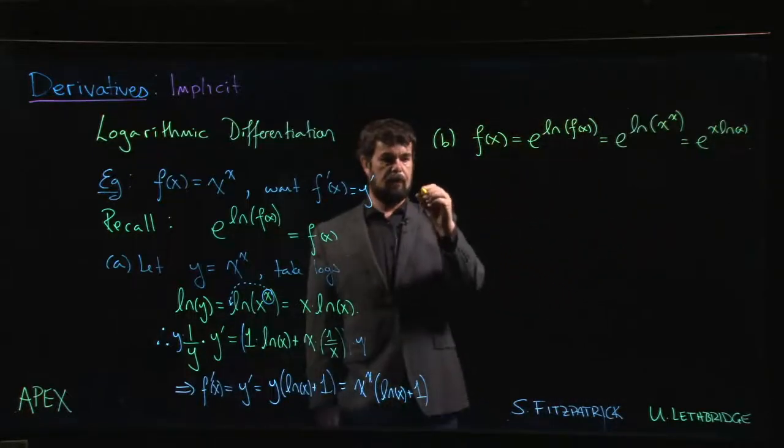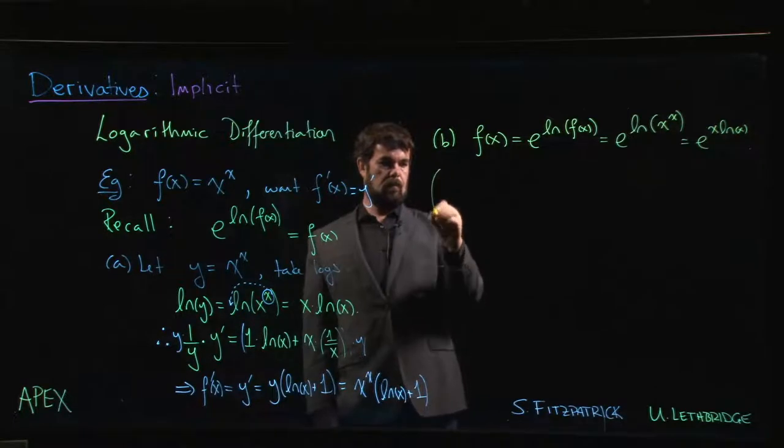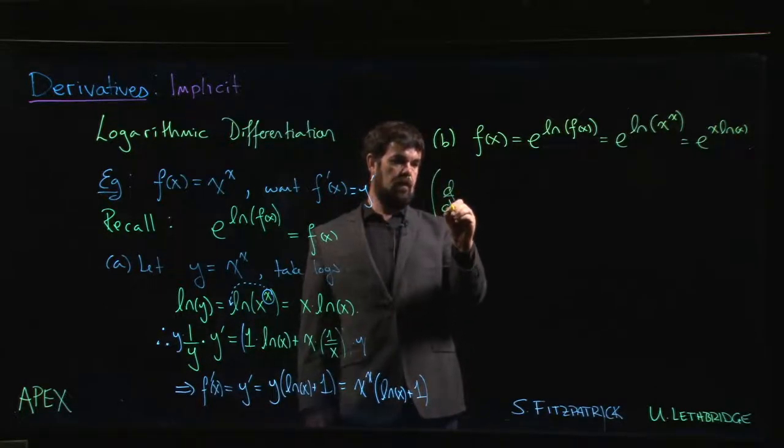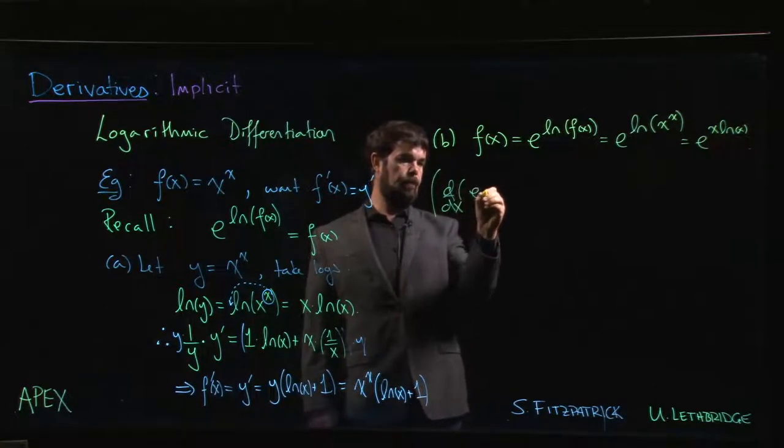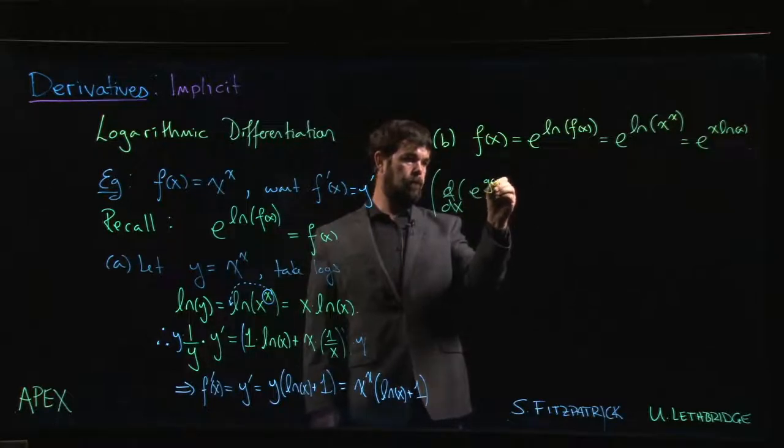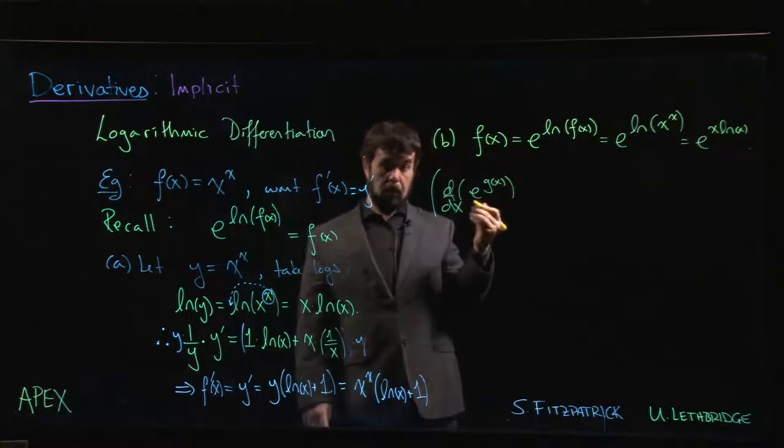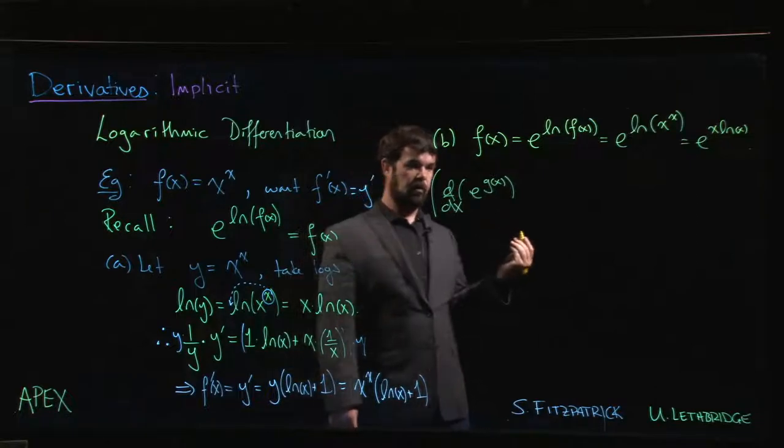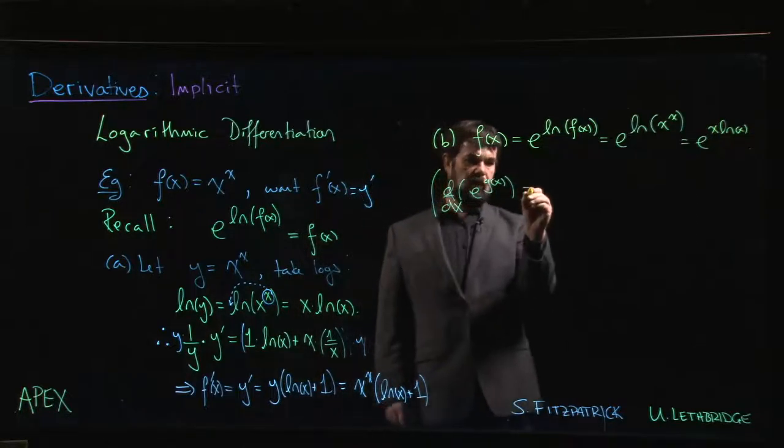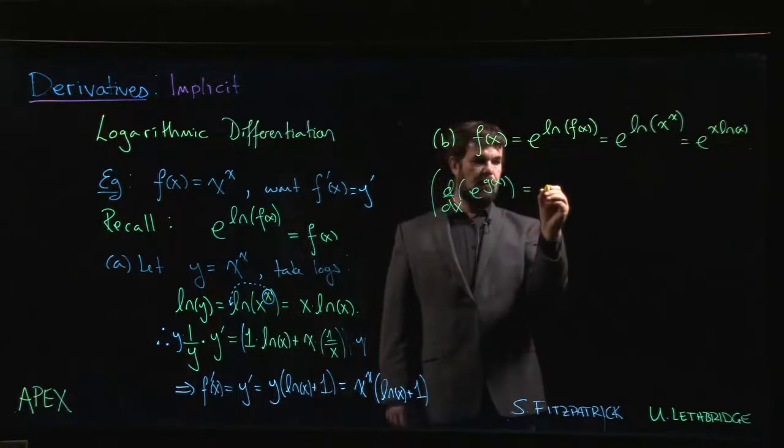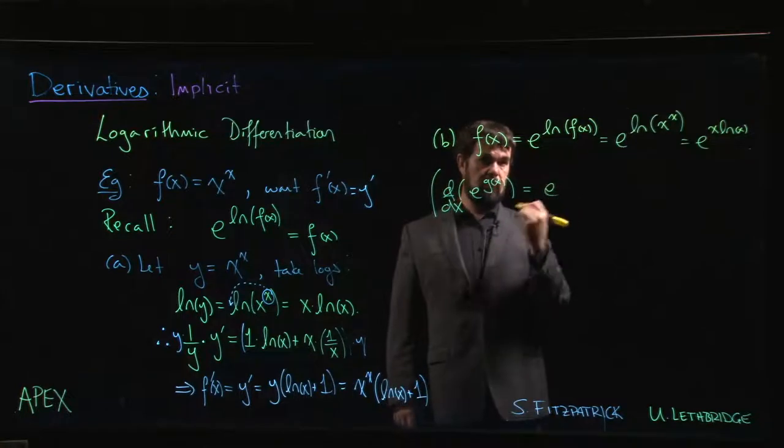We take the derivative of the outside, but nothing happens when you take the derivative of the exponential function. You evaluate at the inside and then you multiply by the derivative of the inside.